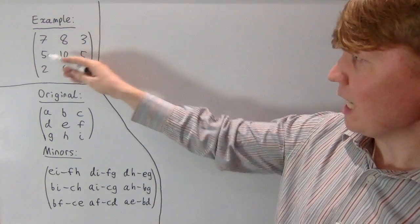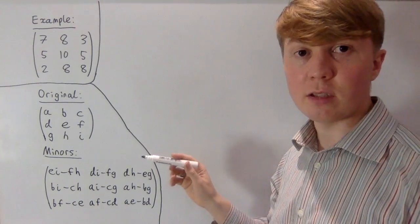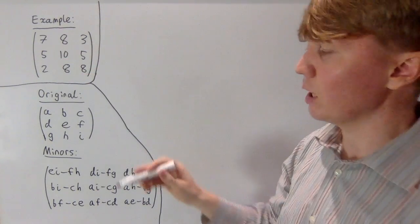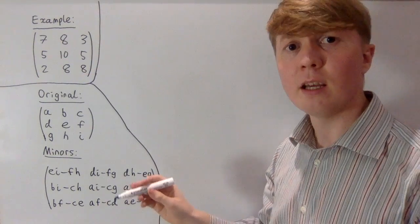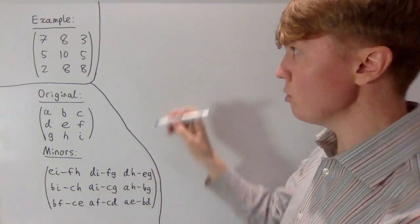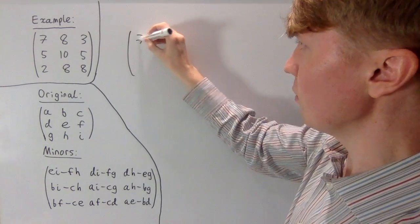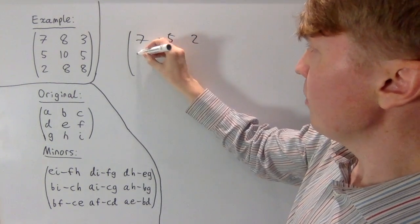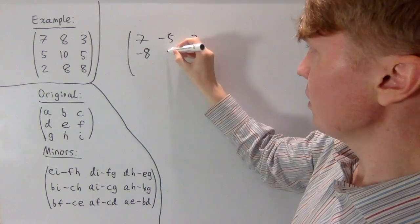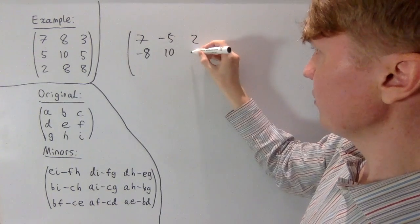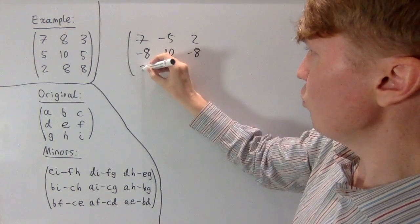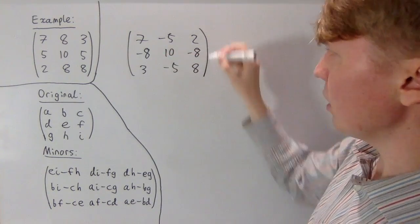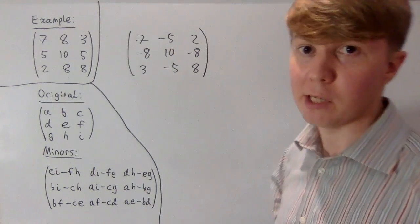If we introduce the negative signs to get the matrix of cofactors, we'd have minus 8, minus 5, minus 5, minus 8, and so on. Then we'd transpose this to get our adjugate matrix, which gives us 7, minus 5, 2, minus 8, 10, minus 8, 3, minus 5, and 8. So this is our adjugate matrix.